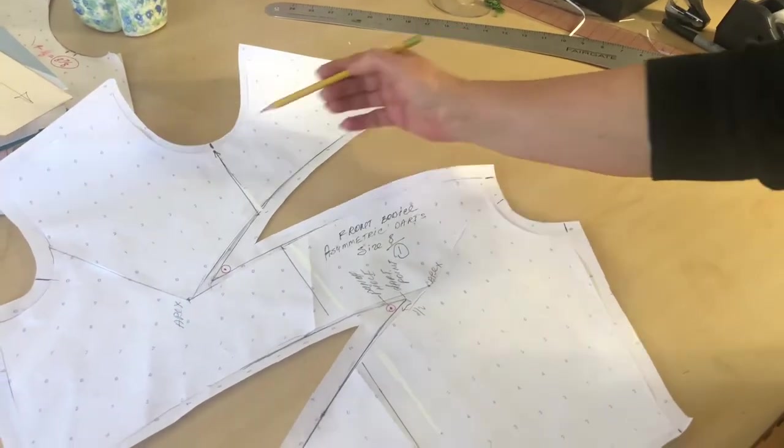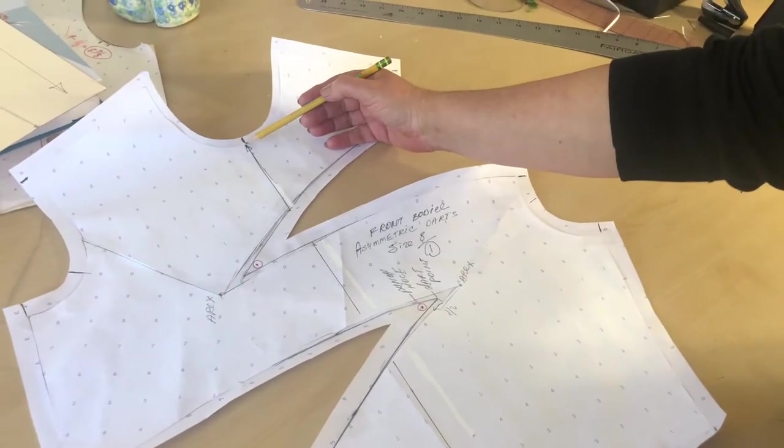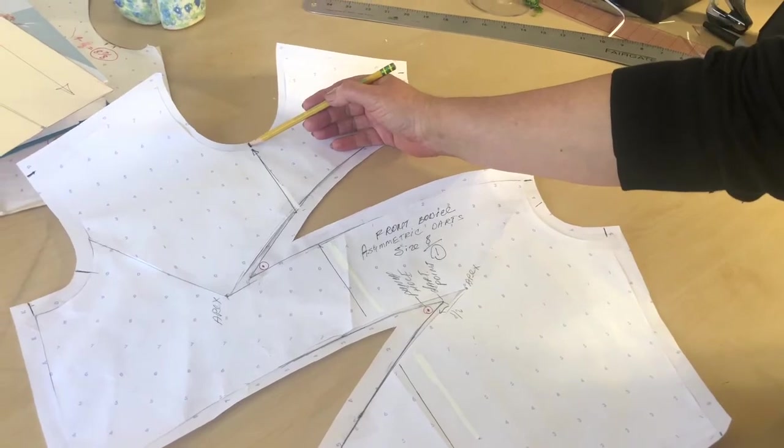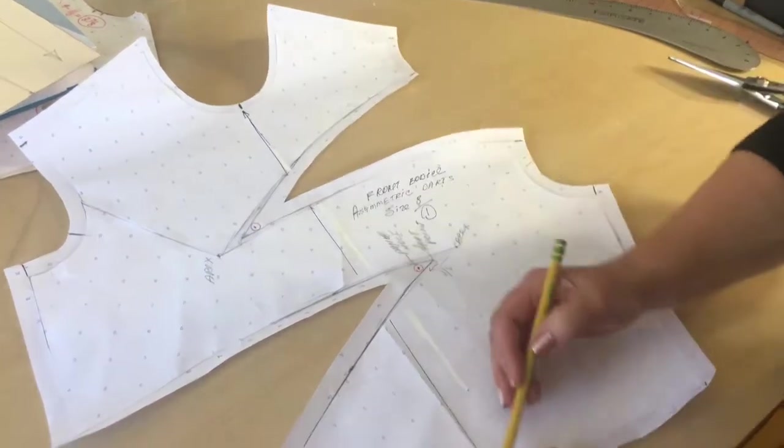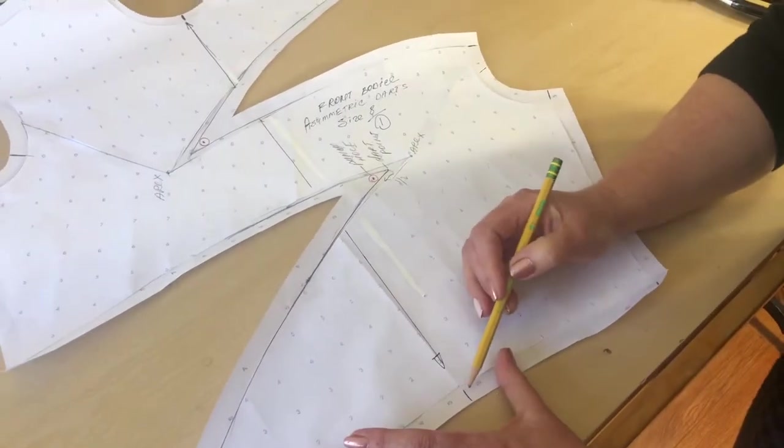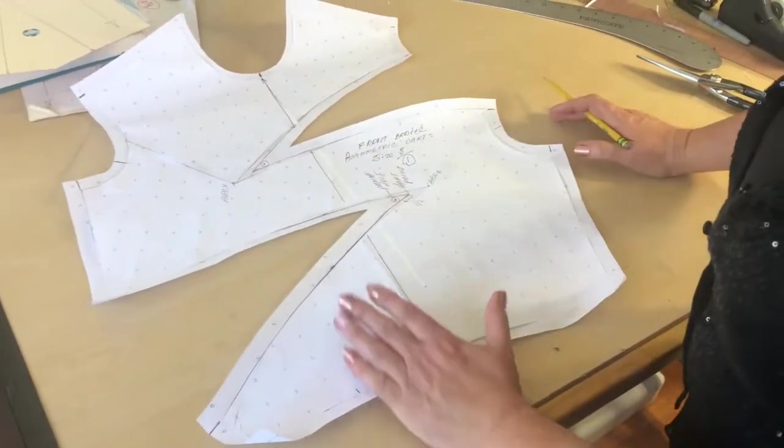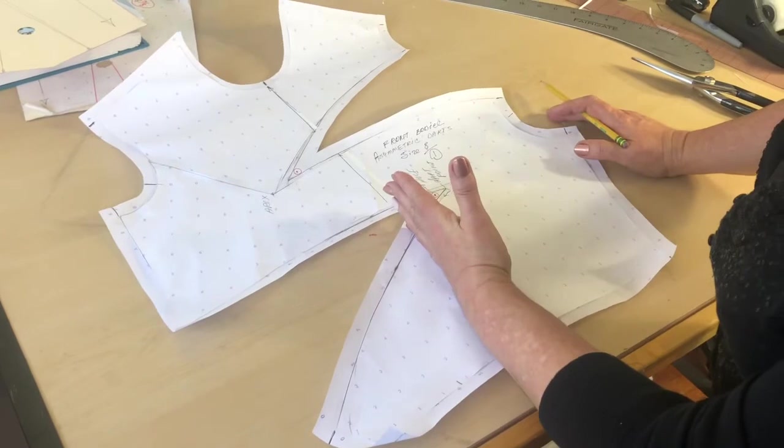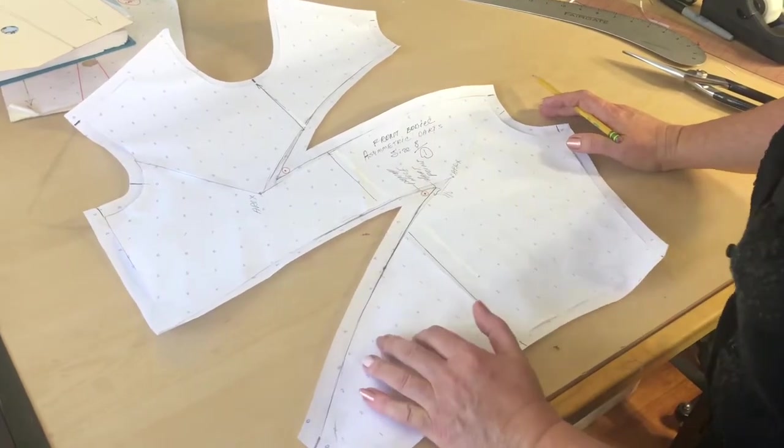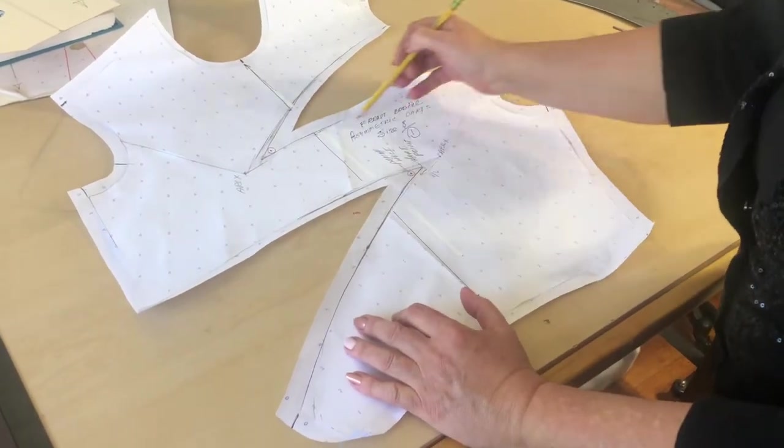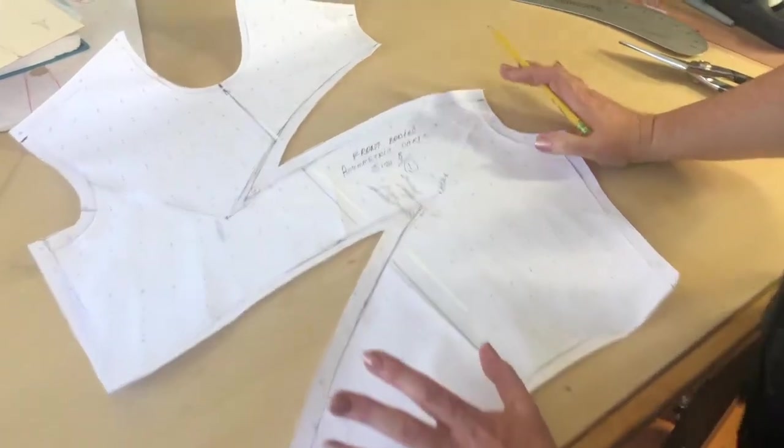The grainline is going to connect from the center front neckline to the center front at the waist. That is my grainline, meaning that's the direction that I'm going to cut my fabric. And definitely I should not forget my label, and my pattern is done.